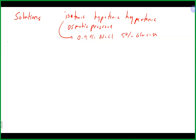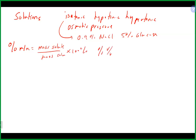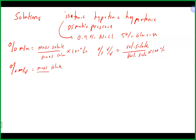We talked about concentration units. Percent mass-to-mass is the mass of solute divided by the mass of the solution times 100%. Percent volume-to-volume is the volume of solute over the volume of solution times 100%. Percent mass-to-volume is the mass of solute divided by volume of solution times 100%.